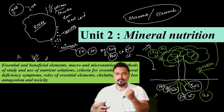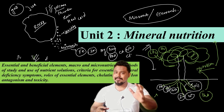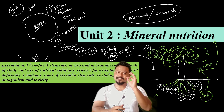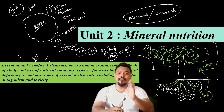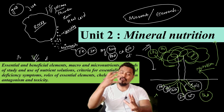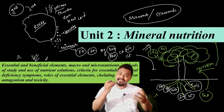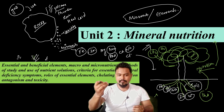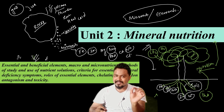Essential elements are those that are absolutely required by the plant — like essential food components such as carbohydrates. Beneficial elements are not strictly required but can help the plant with growth and development. So beneficial elements can help the plant, but essential elements are what the plant must have.